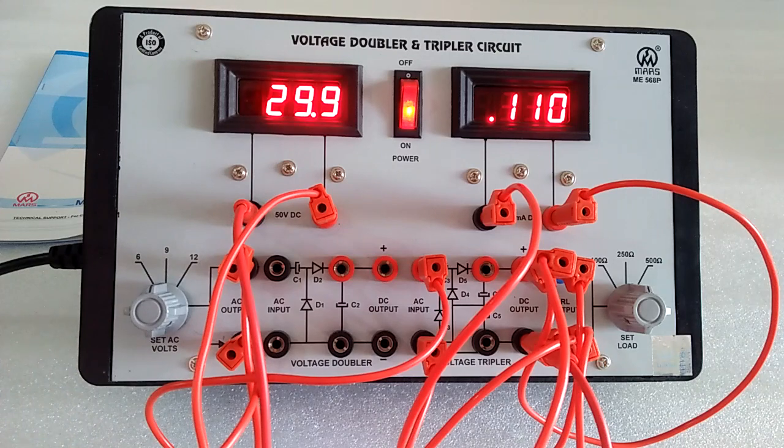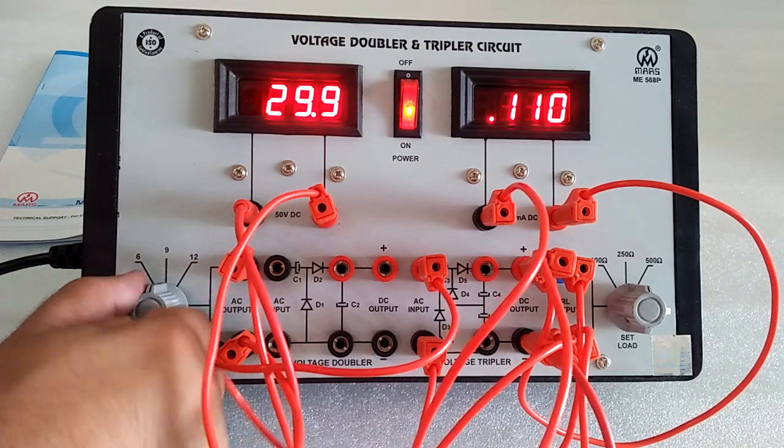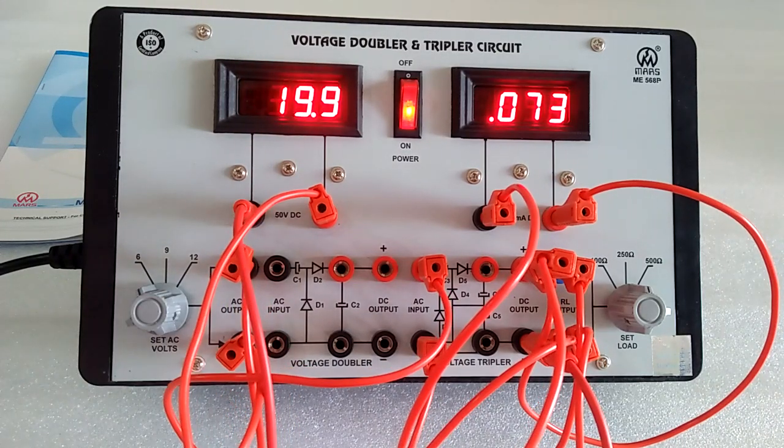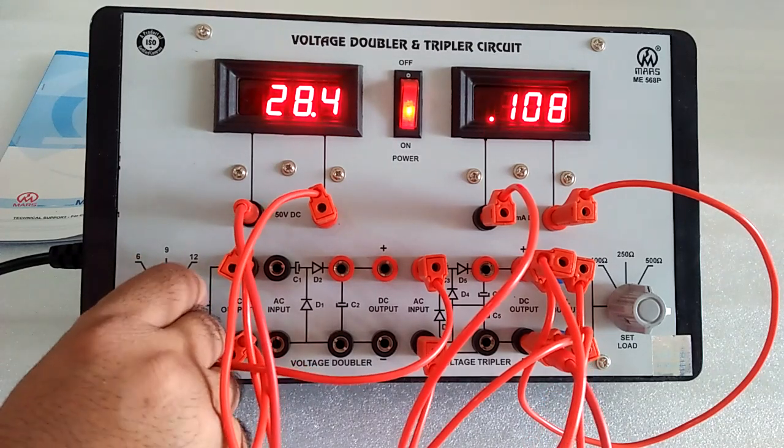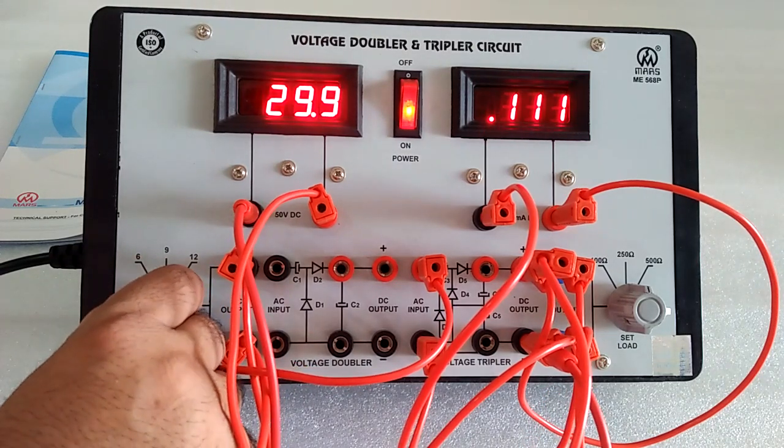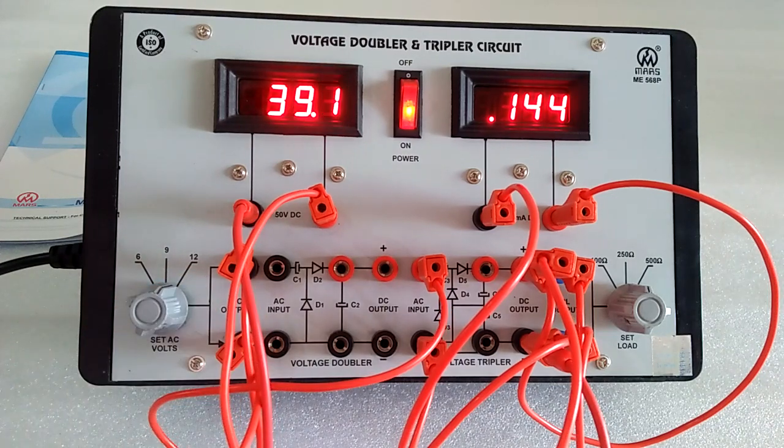Now the voltage is almost tripled. Testing with 6 volts, 9 volts, and 12 volts shows the tripling effect.